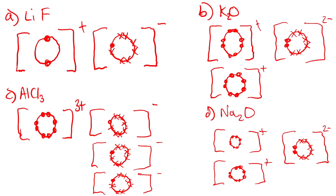Finally, sodium oxide needs 2 sodiums because sodium only has 1 electron to lose, but oxygen needs 2. We draw each sodium's outer shell with 8 electrons and a + charge. Oxygen has its 6 normal electrons plus 2 from the sodiums, giving it a 2− charge.